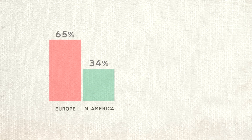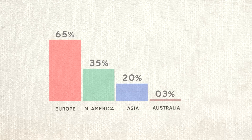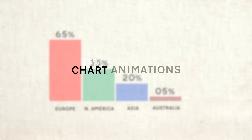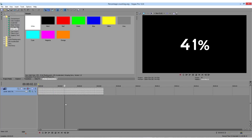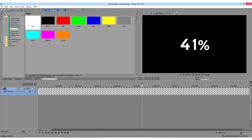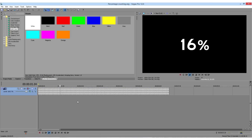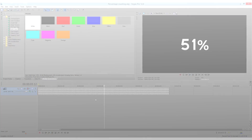Today I'm going to show you how to make a professional chart animation using Sony Vegas Pro 12. Before we start, you need to create a Vegas project file where you have 100 pieces of text media counting from 0 to 100%. In order to save time, I will put a download link in the description.